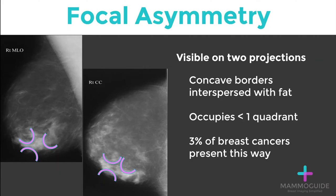Focal asymmetry is when there is an abnormality visible on two projections. It has concave borders interspersed with fat, lacking the margins and convex borders of a mass. By definition, a focal asymmetry occupies less than one quadrant of the breast, and approximately 3% of breast cancers present in this fashion.